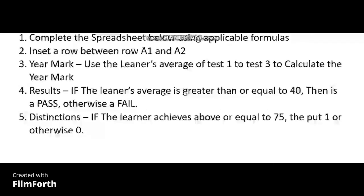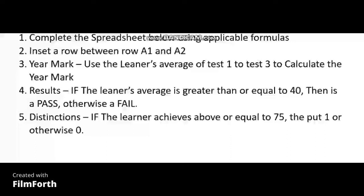If you check, it is not exactly how it's going to come around but it might sound something like this: 'Complete the spreadsheet below using applicable formulas. Insert a row between row A1 and A2. Year mark — use the learner's average of test 1 to test 2 to calculate the year mark. Results: if the learner's average is greater than or equal to 40, then it's a pass, otherwise a fail.'